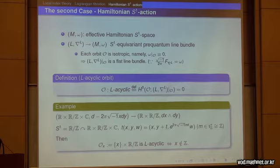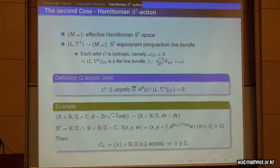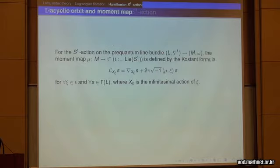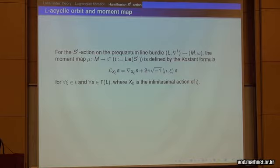For example, consider a two-dimensional cylinder with a trivial Hermitian line bundle with a standard connection and a circle action. A direct computation shows that the orbit at x is L-acyclic if and only if x is not an integer. L-acyclic orbits can be detected by the moment map: for our setting, where the S¹ action lifts to the pre-quantum line bundle, the moment map is defined by the standard contact formula. We can show the following lemma: if an orbit is non-L-acyclic, then the orbit is included in the inverse image of a lattice point.